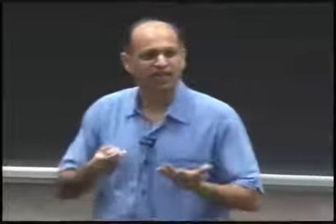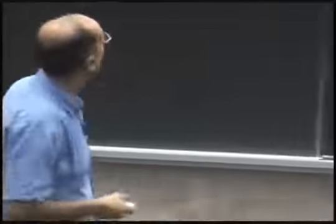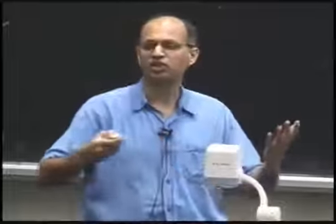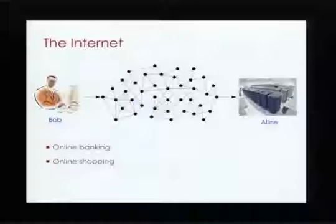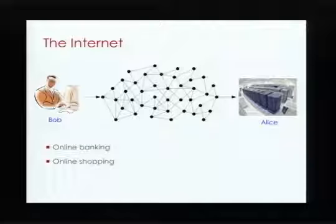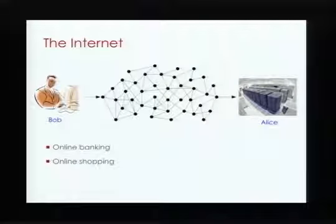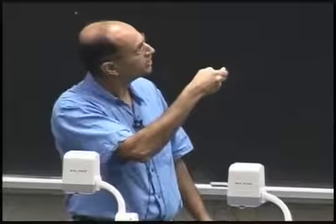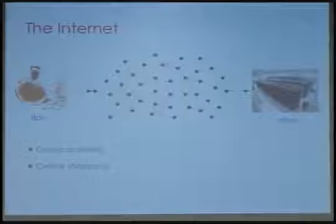More seriously: consider when Bob is an actual person and Alice is the set of servers for a large company. For instance, if Bob is doing his online banking with CIBC, Alice is CIBC's computer. At some point Bob wants to download his bank information over the internet, and he wants that to be secured — otherwise any eavesdropper sitting at any node along the way might be able to read Bob's private banking information.